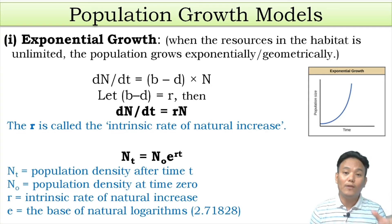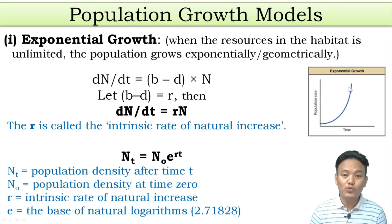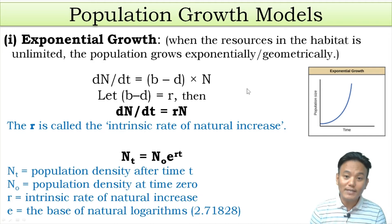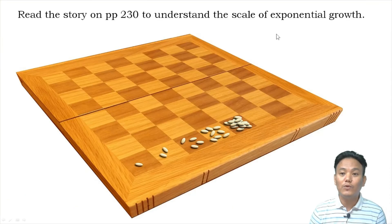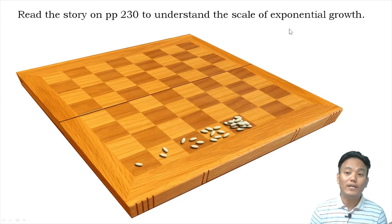This is a theoretical situation where a habitat has unlimited resources for an organism, so the organism reproduces at maximum capacity and its population increases exponentially. In nature this doesn't happen, because resources are always limited. So the exponential growth model is a hypothetical, theoretical one. To understand the scale of exponential growth, you should read the story on page 230 of your textbook, which illustrates the scale through a fable.